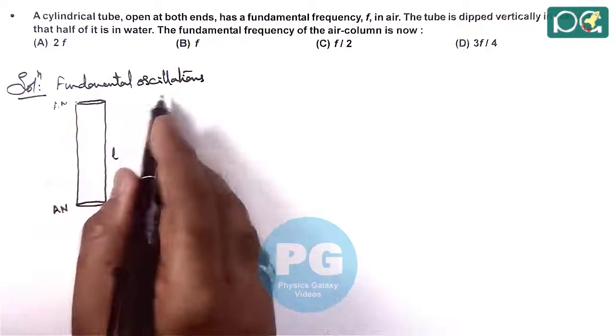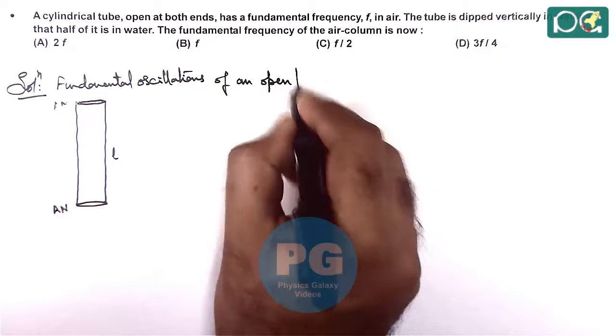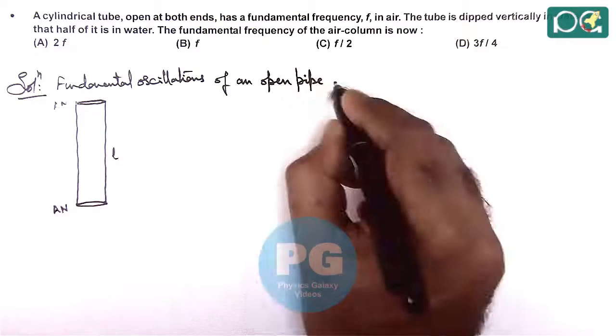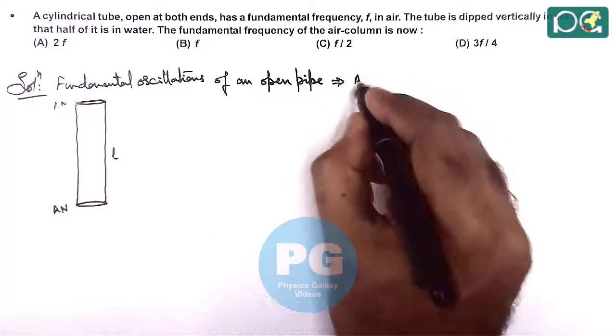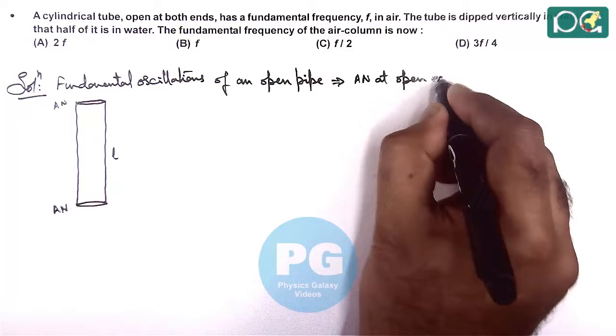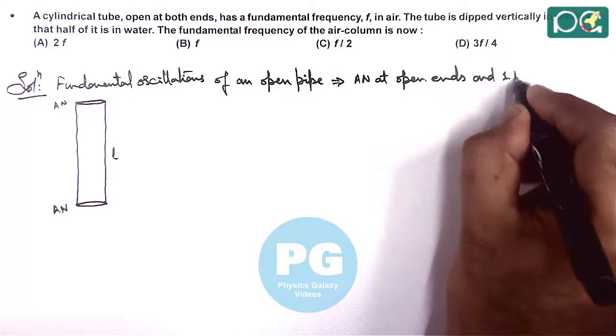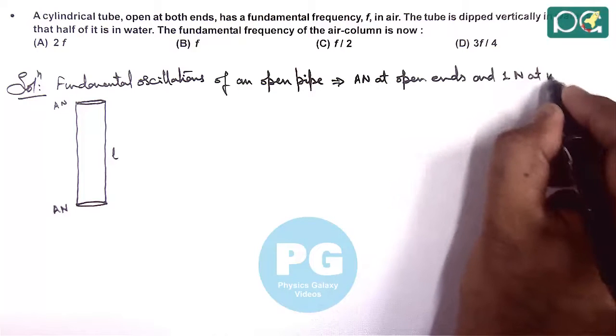Fundamental oscillations of an open pipe, this implies anti-node at open ends and one node at middle.